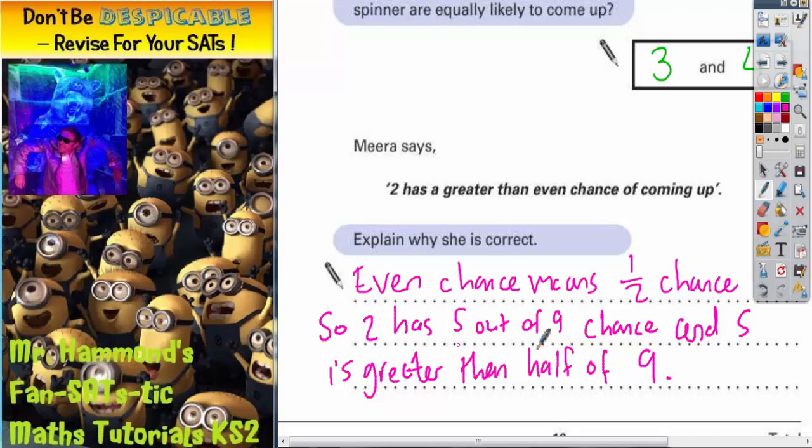So because it's 5 out of 9, it's bigger than 4 and a half out of 9. Therefore, it has a greater than half chance. So therefore, this is greater than half or even chance.